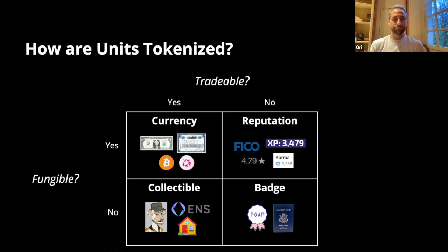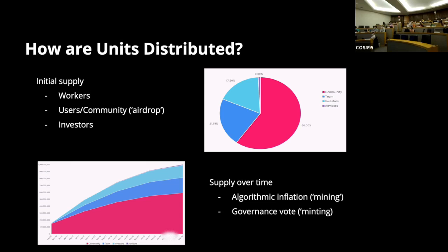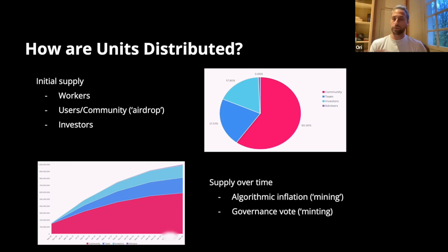There's also the question of how units get allocated. There's an initial supply to maybe the team and the people involved in building before launch, then people who have been using the service the organization provides, or a broader community of partners. If there's been financing, there's the ability to pre-purchase units, just like in a joint stock company. Then there's the question of how units distribute over time — is there algorithmic inflation where you do valuable work for the network and automatically get more minted units, or can holders of the units decide manually to issue more?